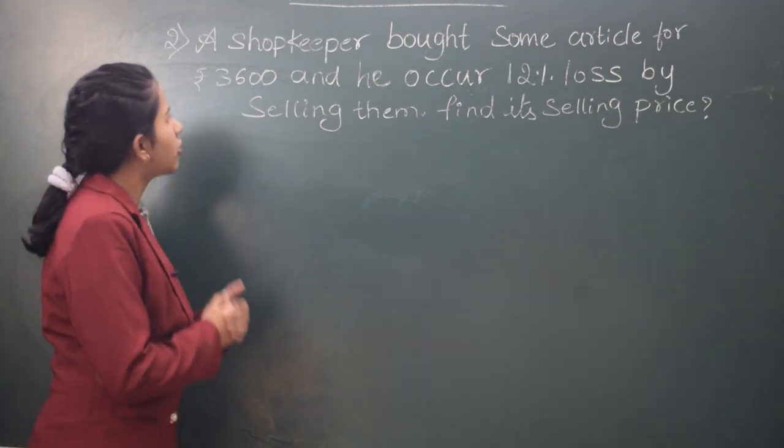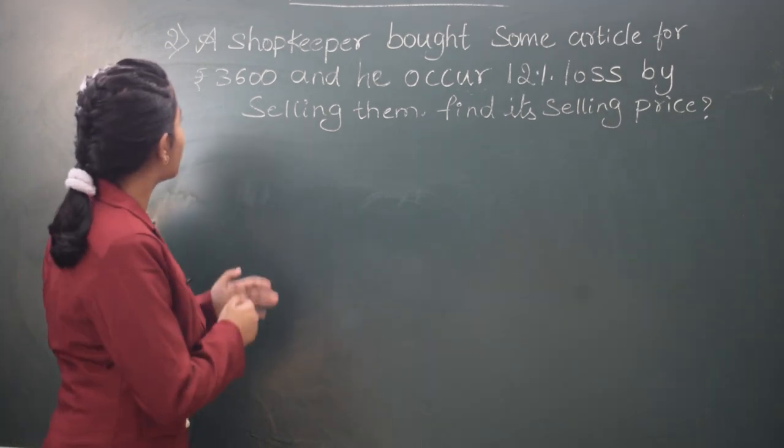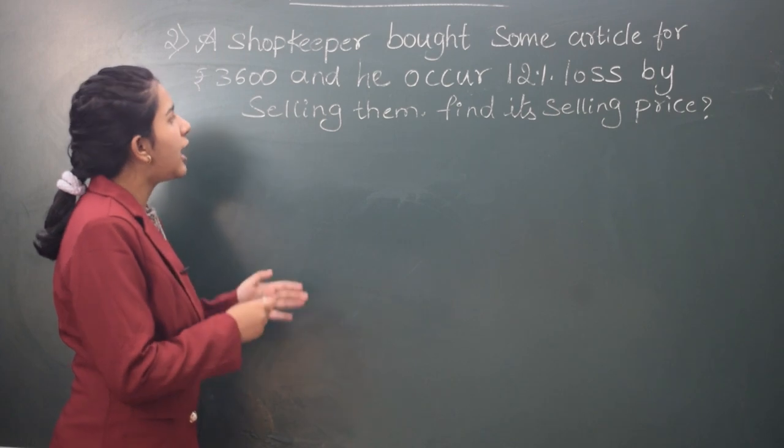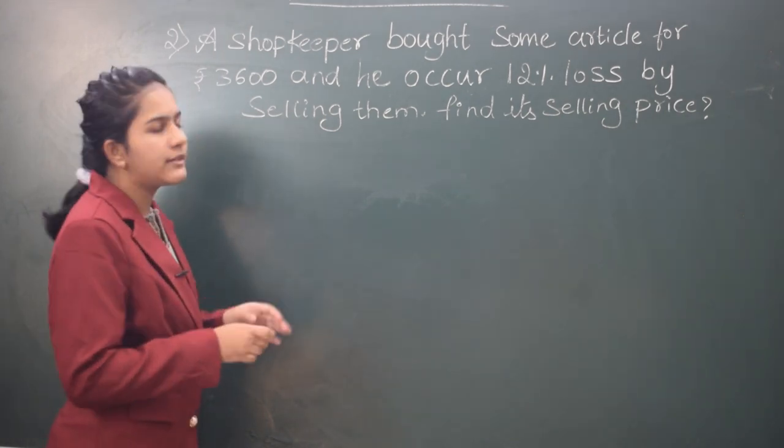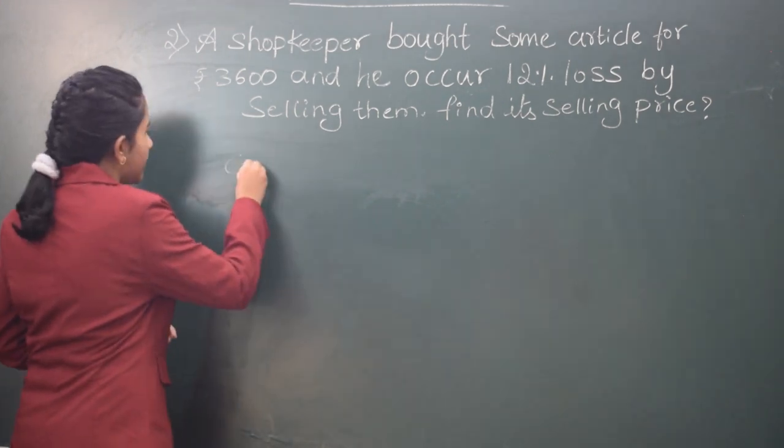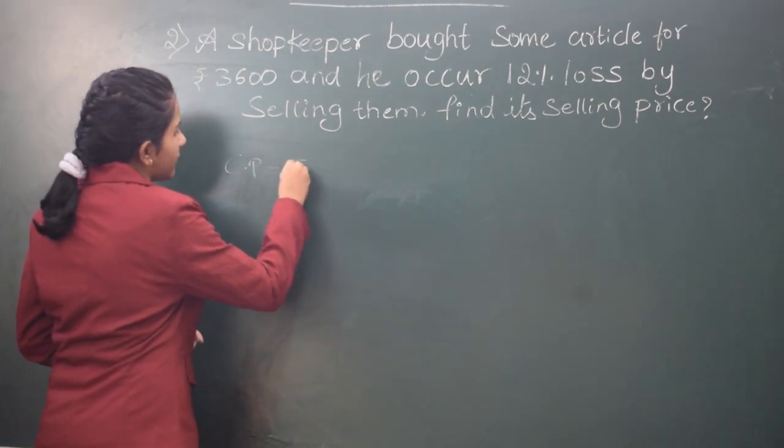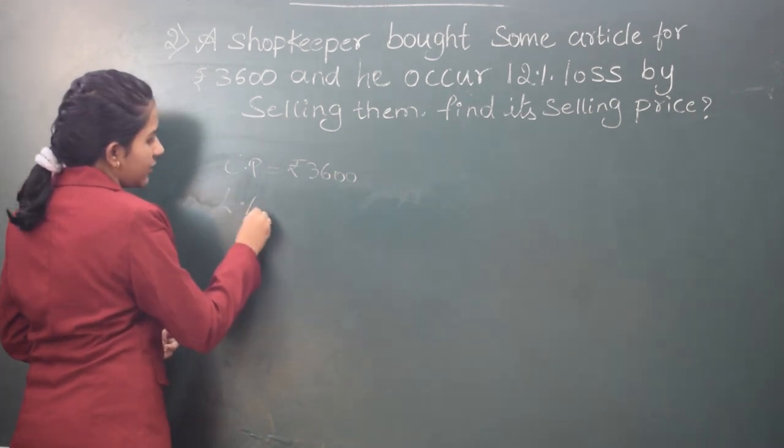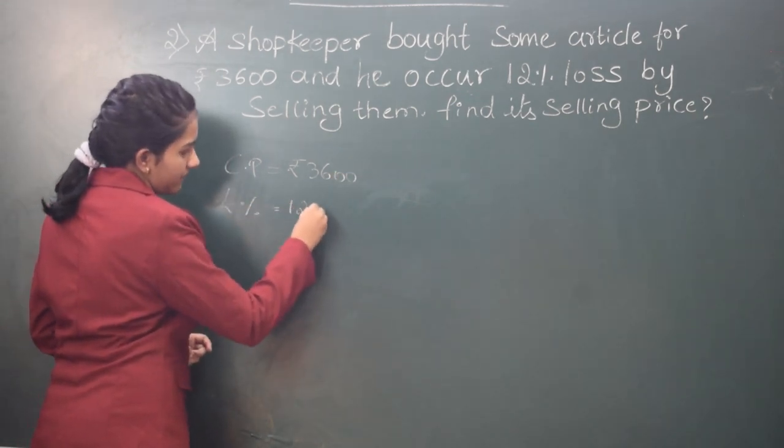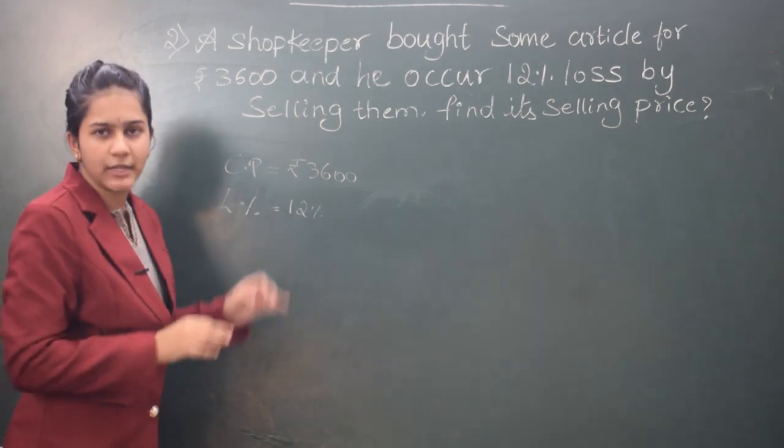So the question is, a shopkeeper bought some article for Rs. 3600 and he incurred 12% loss by selling them. Find its selling price. So the cost price is Rs. 3600 and loss percentage is 12%. We should find the selling price of the article.